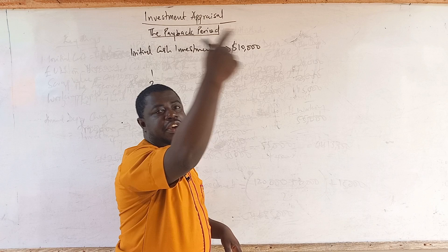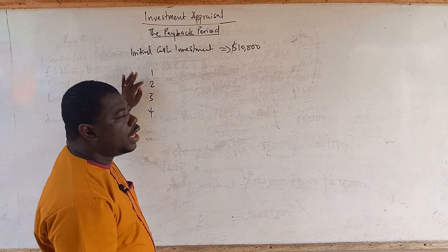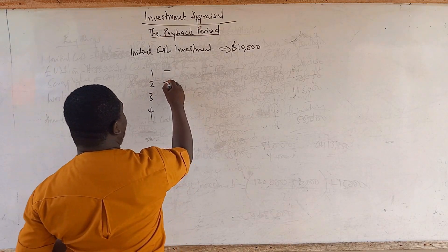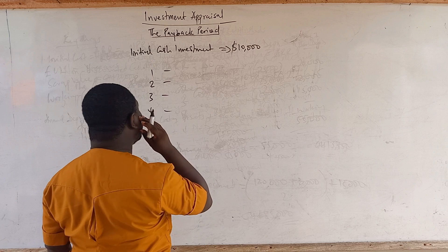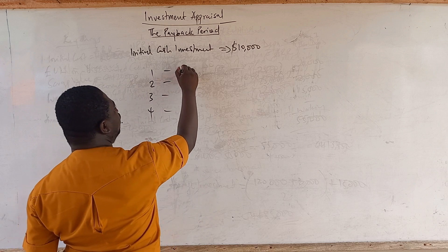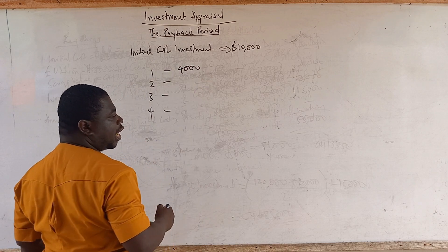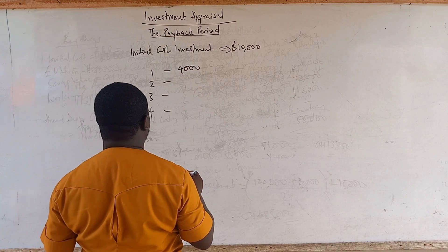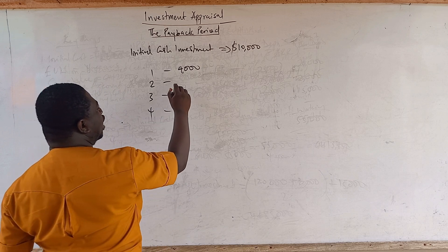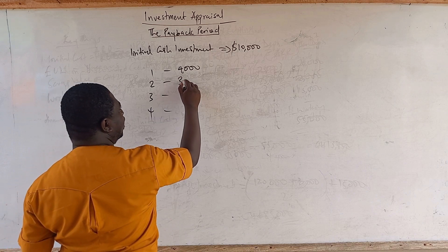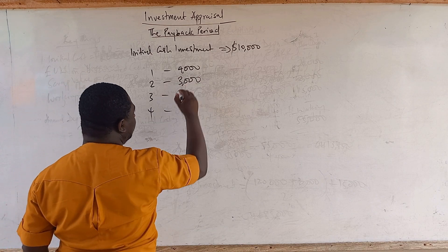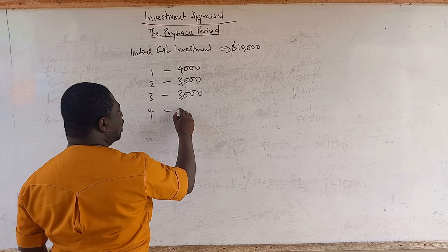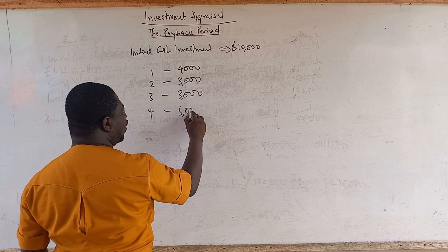Let's assume these are the cash flows coming from the investment. In year one, you are getting $4,000 as your net cash flow, which is positive. In year two, you are getting $3,000. In year three, you are getting $3,000. In year four, you are getting $5,000.